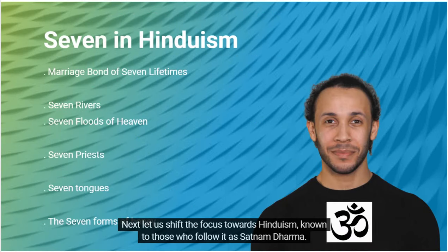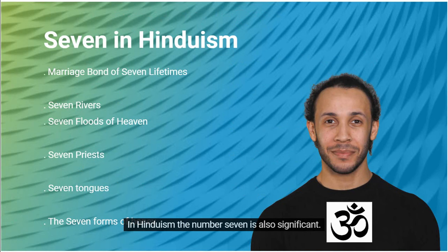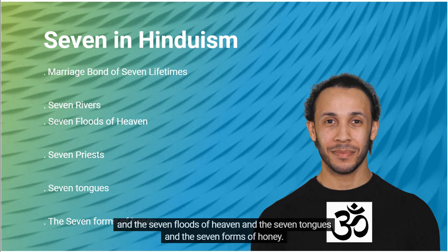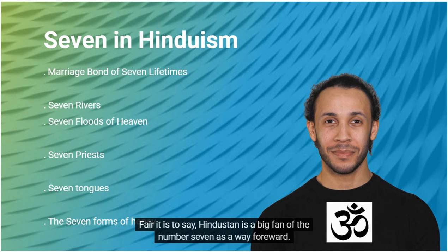Next, let us shift the focus towards Hinduism, known to those who follow it as Satnam Dharma. In Hinduism, the number seven is also significant. The Vedas speak of the marriage bond that lasts seven lifetimes, the seven rivers, the seven floods of heaven, the seven tongues, and the seven forms of honey. Fair it is to say, Hindustan is a big fan of the number seven.